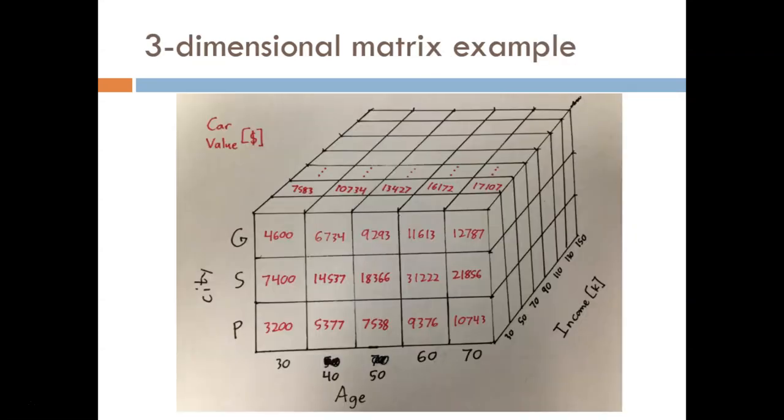Here's an example just to show you what a three-dimensional matrix might look like. Each of the small cubes represents an individual value. The size of this example is three rows down, five columns across, and seven layers deep.